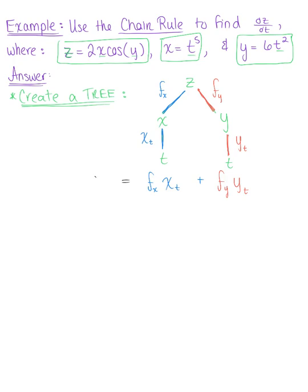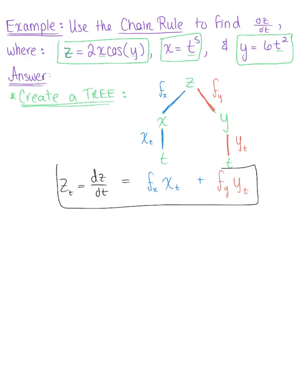So that gives us the derivative dz/dt. If you don't like that differential notation, you can use the subscript z-sub-t. So this is our chain rule for this function, and now that we see the chain rule formula we need, we're ready to find the partial derivatives.